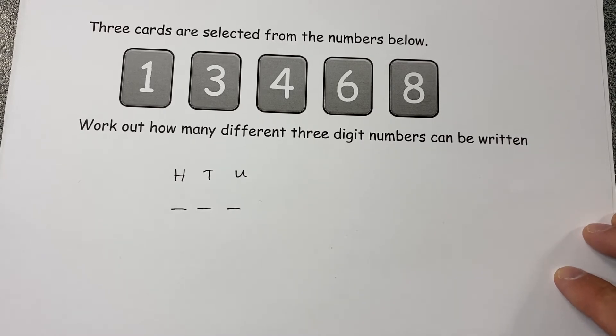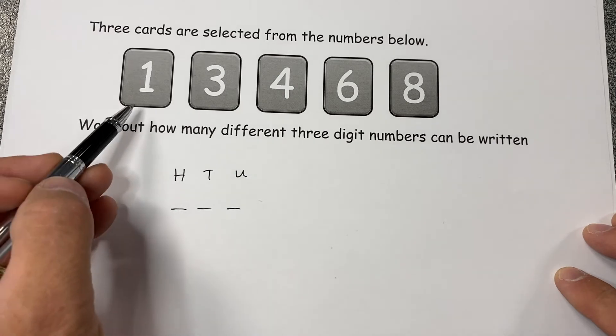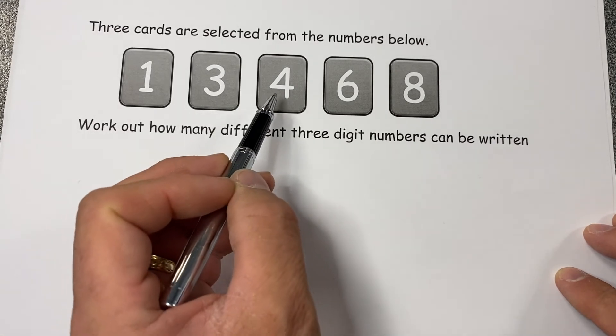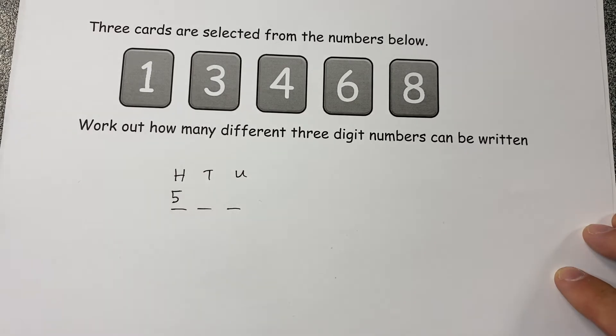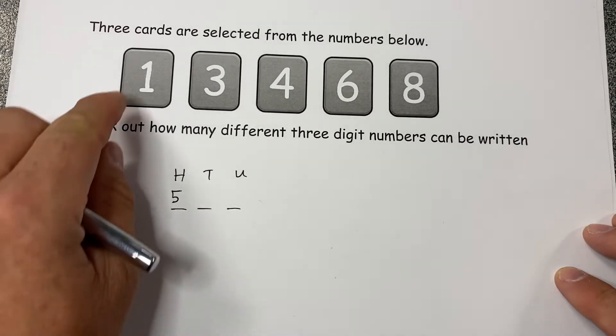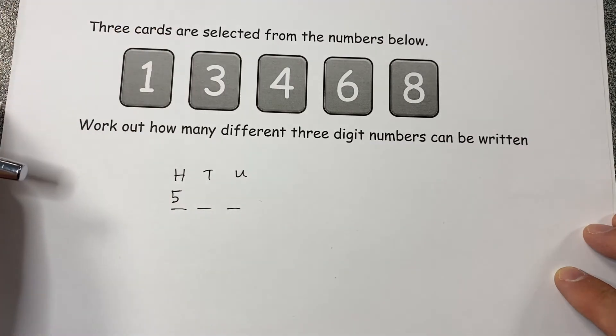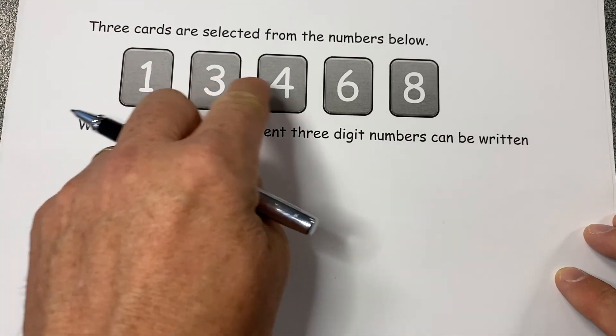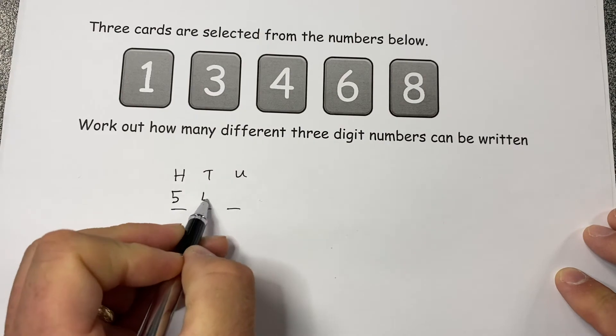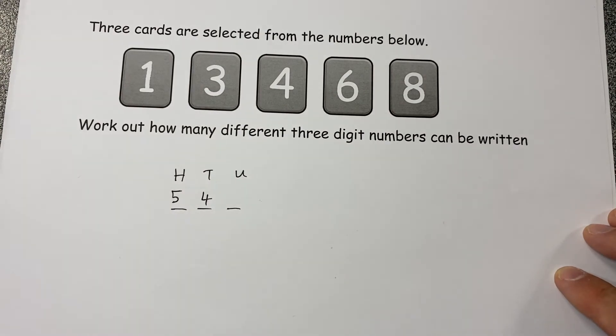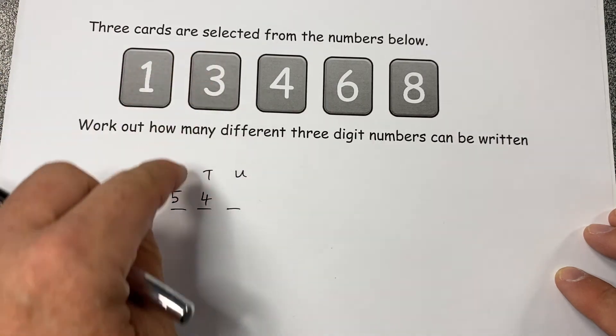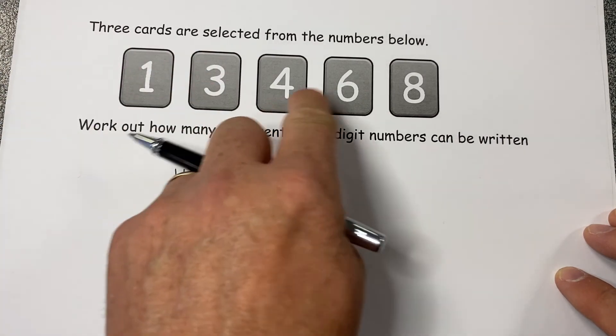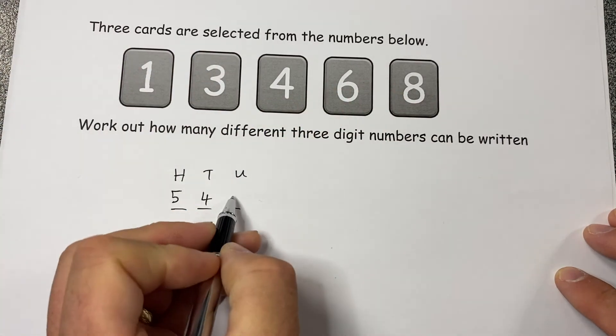Well, the hundreds we could have 100, we could have 300, we could have 400, we could have 600, we could have 800. So there are five options for that column. But if I select one of them, the tens will be one of the four cards left. Now if I've selected the one for the hundreds and the three for the tens, then the units is one of them three that's remaining.